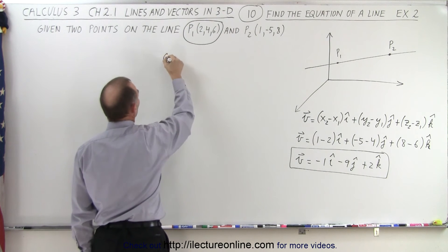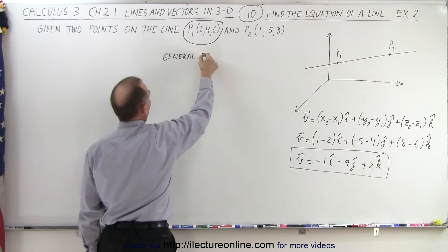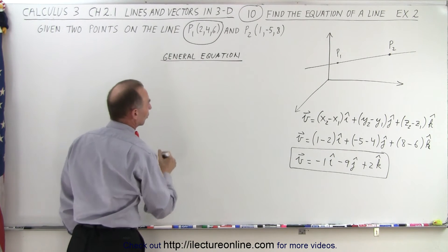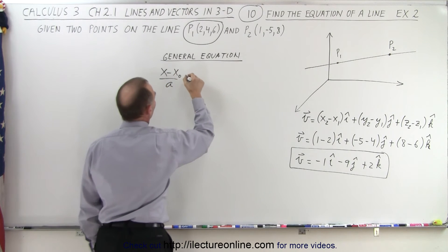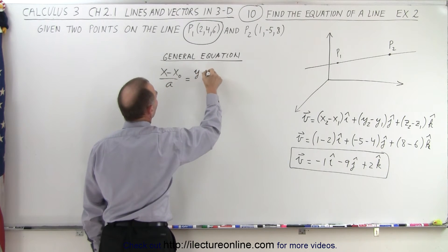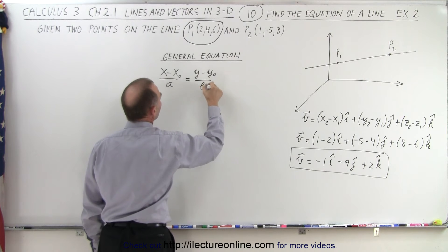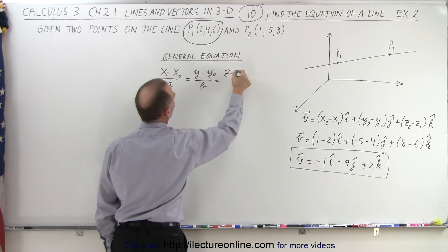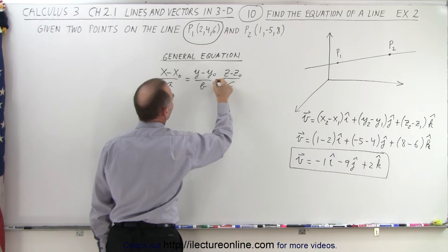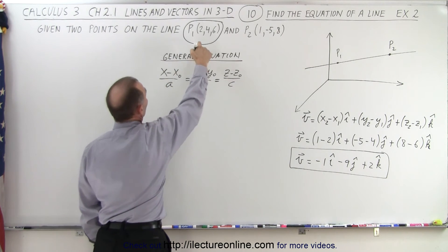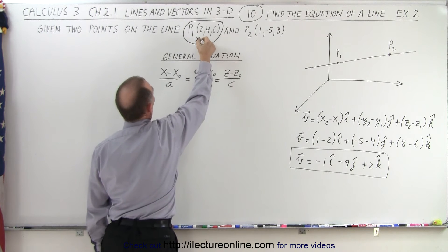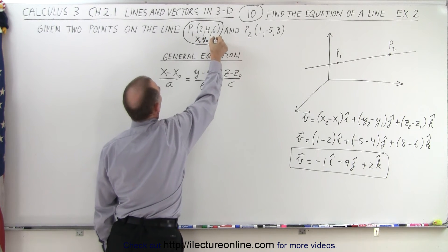And now we start with the general equation. So let's write the general equation. It'll be x minus x sub 0 divided by a equals y minus y sub 0 divided by b equals z minus z sub 0 divided by c. Now plug in the values. So this would be x sub 0, y sub 0, and z sub 0.